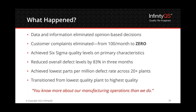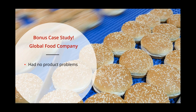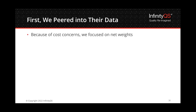Here's a bonus example — another food company with no product problems; everything was in spec. They'd been using our software for more than a year and called us for a gap analysis: they wanted someone to assess what they'd done and suggest improvements for getting greater value from the software. I went out, spent a day and a half there, and we peered into their data using our software as a crystal ball. Because of cost concerns, we focused on net weights for their top 14 product codes. This plant made 150 different products, but we only focused on 14.